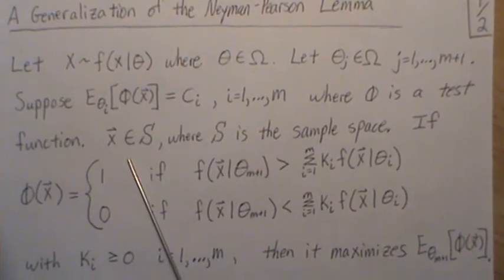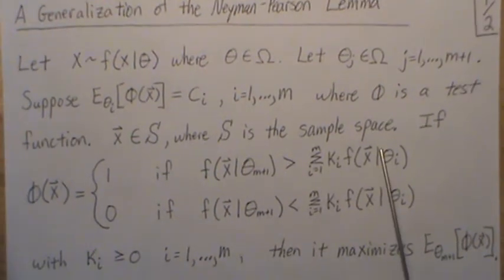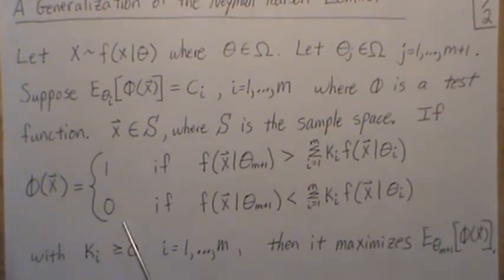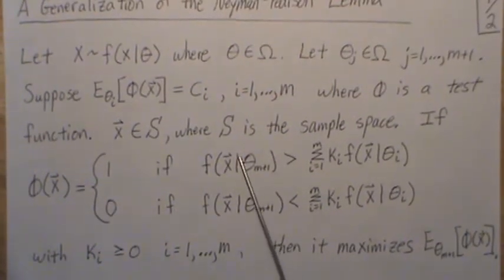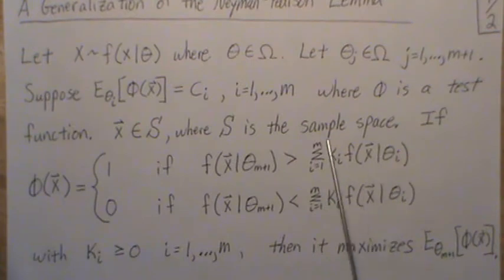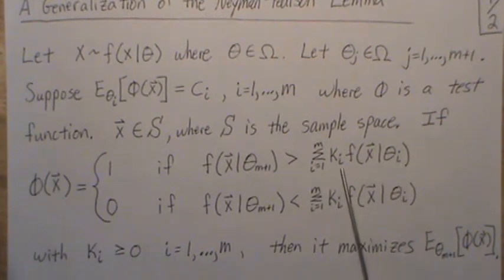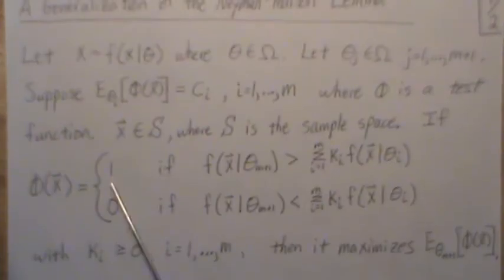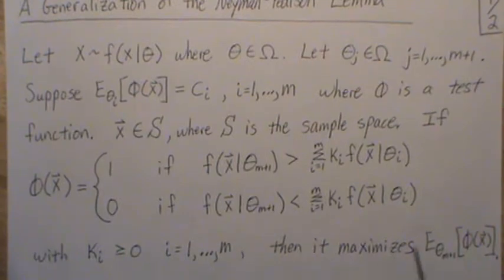Phi is a test function, and x, our data, lives in some sample space S. If our test function equals 1 when the density given the true value theta m+1 is greater than this linear combination of the other m thetas and k_i's, and equals 0 when this value is less than that linear combination.